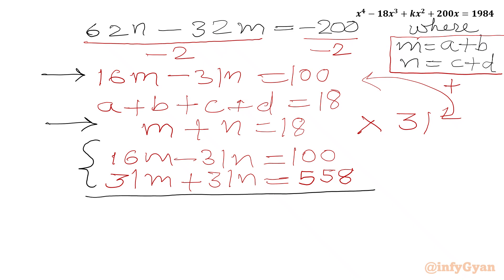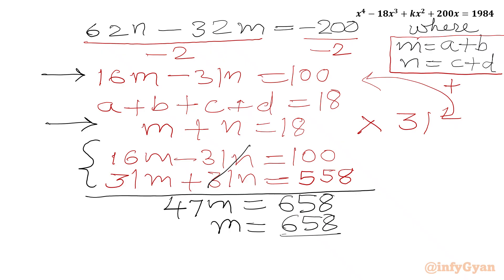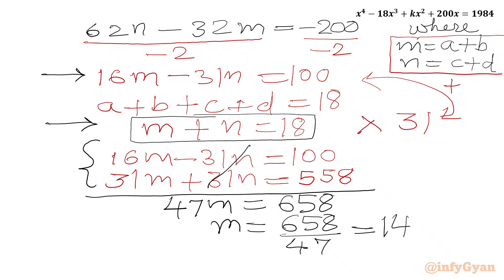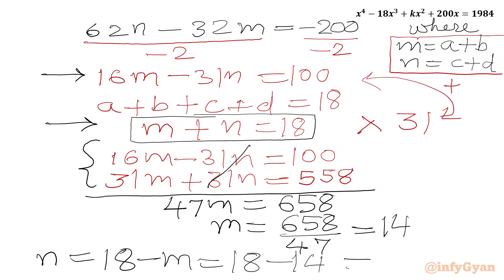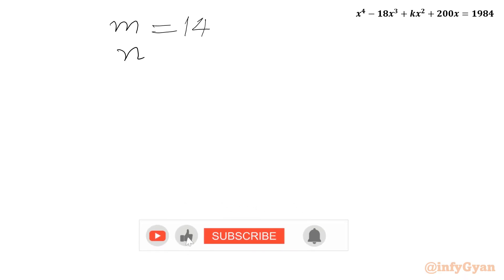Adding the two equations — 16M minus 31N equals 100 and 31M plus 31N equals 558 — the 31N terms cancel. We get 47M equals 658, so M equals 14. Since M plus N equals 18, N equals 18 minus 14, giving N equals 4. So M is 14 and N is 4.